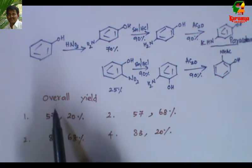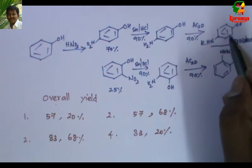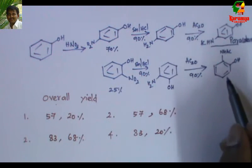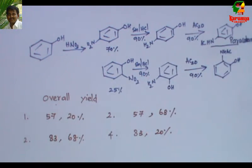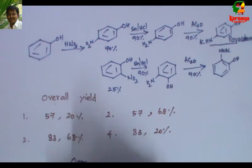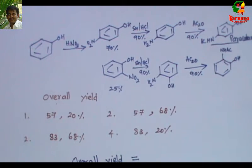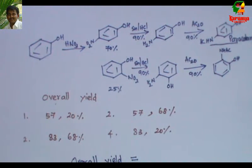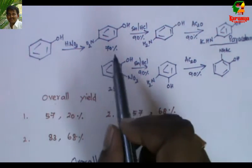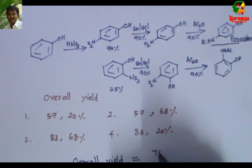Now, the question is: what is the overall yield of 4-hydroxyacetanilide and 2-hydroxyacetanilide? In order to calculate the overall yield, we follow a simple formula: the yield divided by 100.